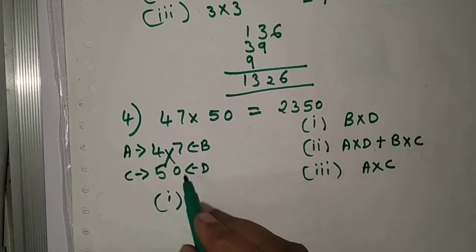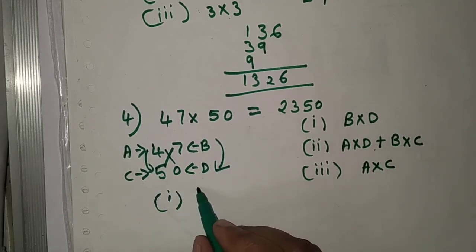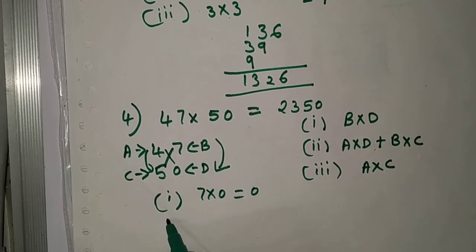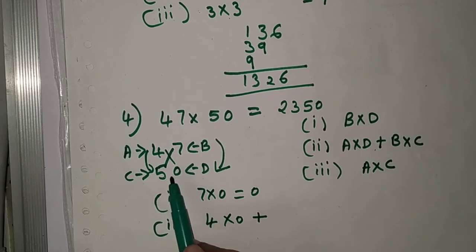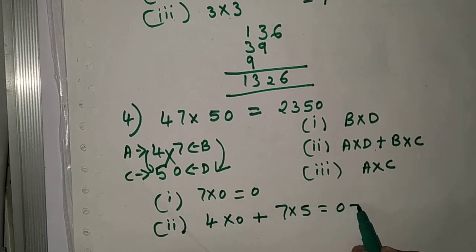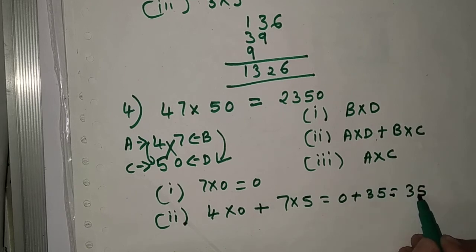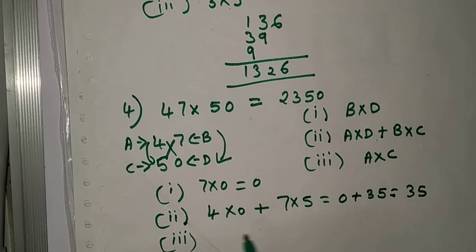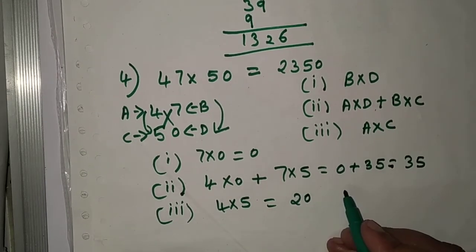First step: B into D is 7 into 0, equal to 0. Second step: A into D plus B into C is 4 into 0 plus 7 into 5, which is 0 plus 35, equal to 35. Third step: A into C is 4 into 5, equal to 20.